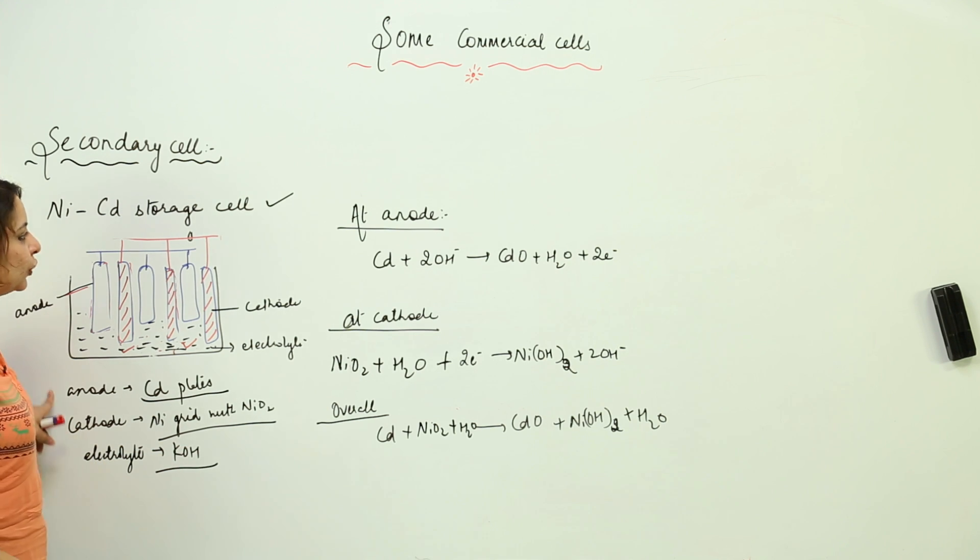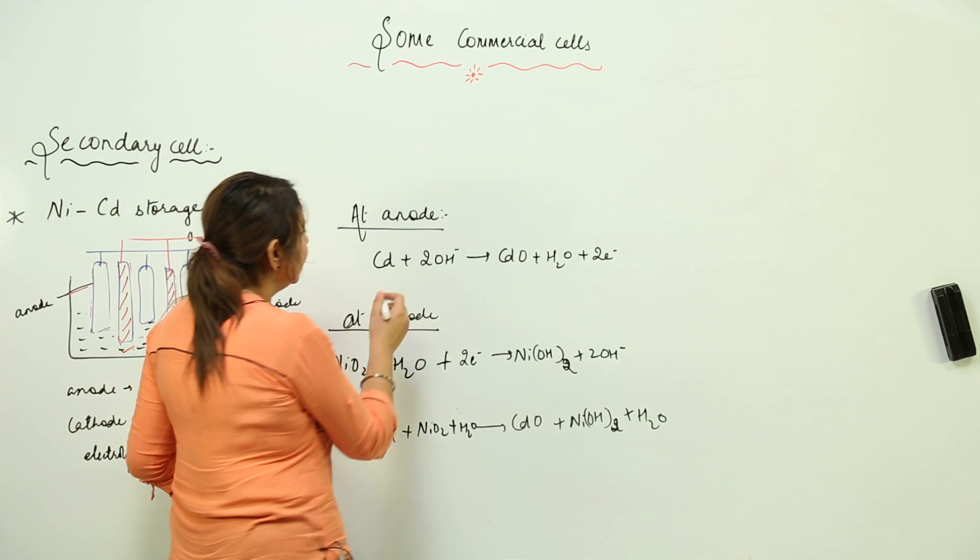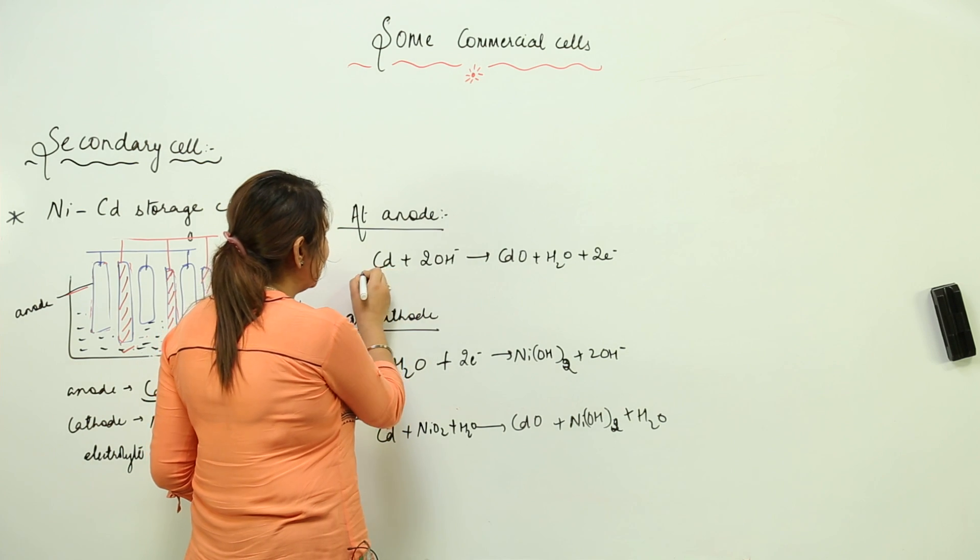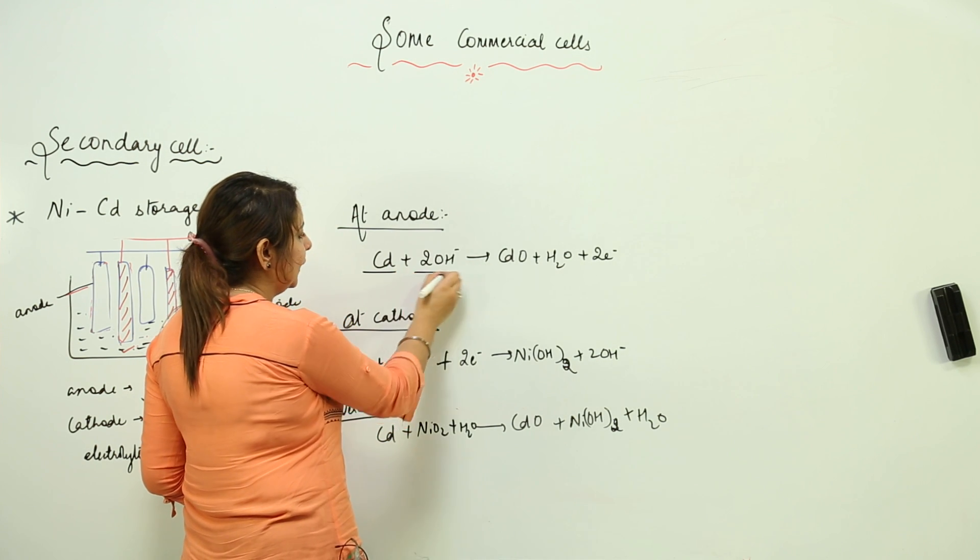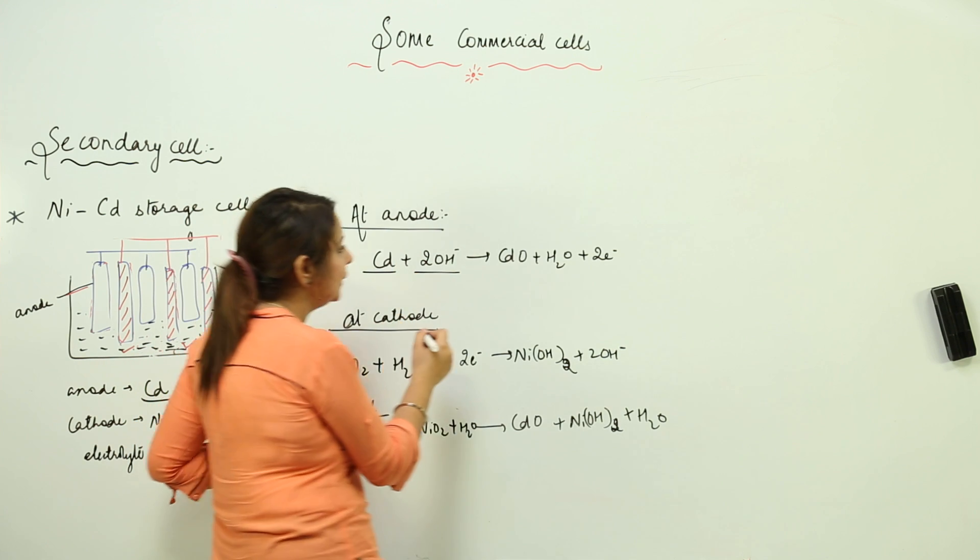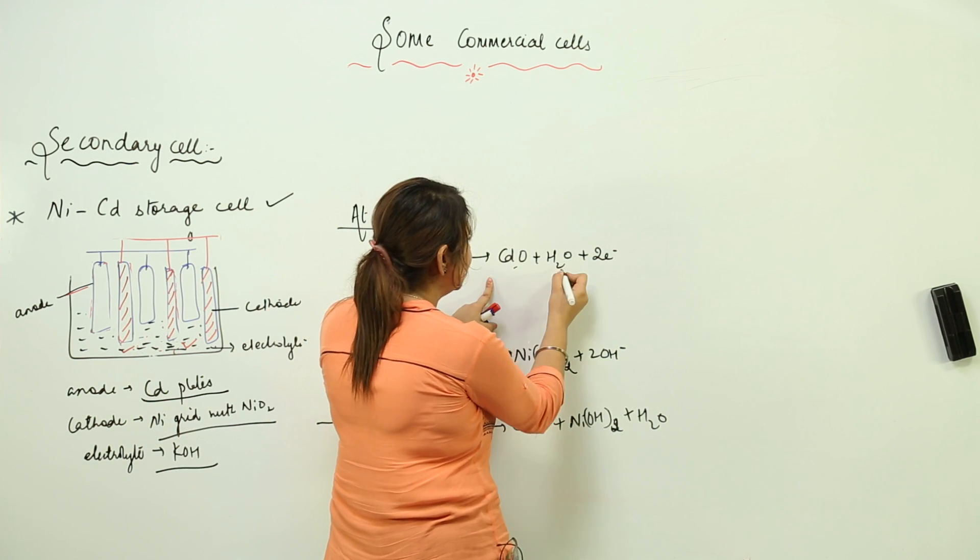At the anode, there is oxidation. The cadmium loses two electrons and combines with the OH ions of the solution, giving rise to cadmium oxide, water, and two electrons.